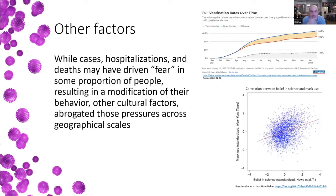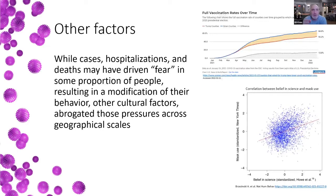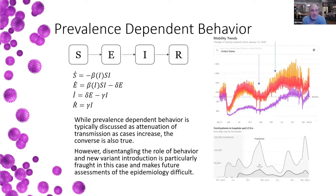Clearly there are other factors besides just movement that matter. Cases, deaths, and hospitalizations may have driven fear in some proportion of the population, resulting in behavior modification, but other cultural factors abrogated those pressures across geographical scales. Belief in science and trust in government have been shown to dramatically impact mask use and vaccination uptake. While I'm not making this political, there are massive differences across areas, but those populations are not monolithic in their beliefs — there's a spectrum of fear and behavior that slides across areas, with implications for how transmission occurs.